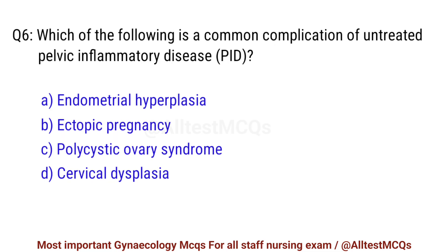Question No. 6. Which of the following is the common complication of untreated pelvic inflammatory disease? Right option is B. Ectopic pregnancy.